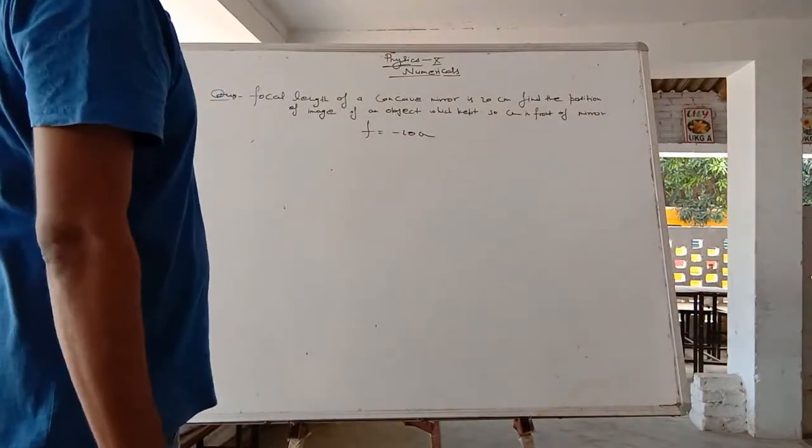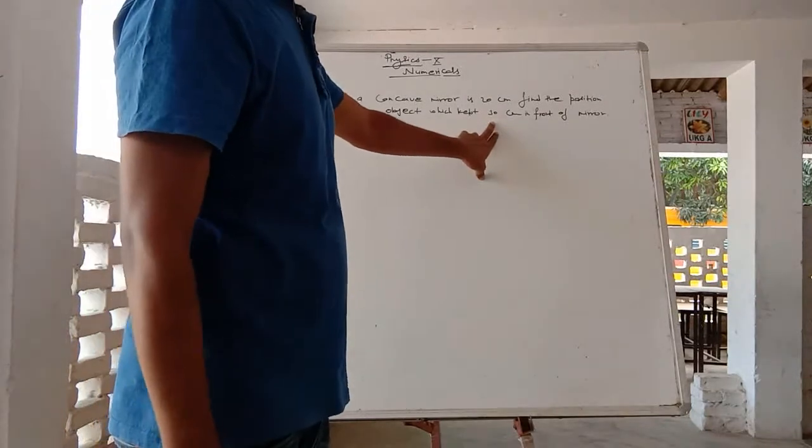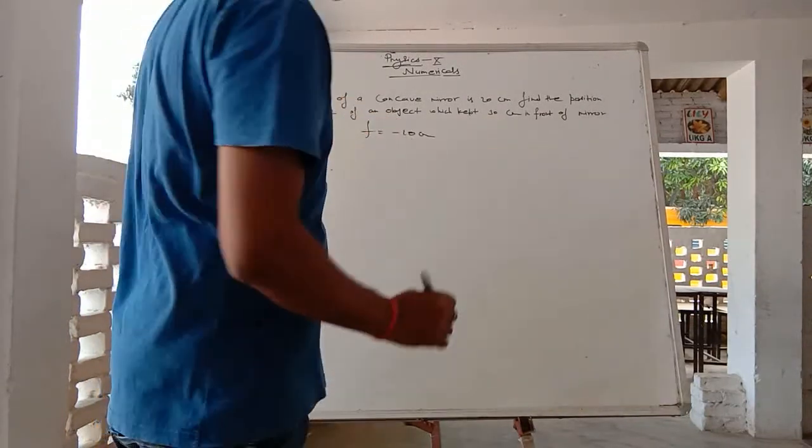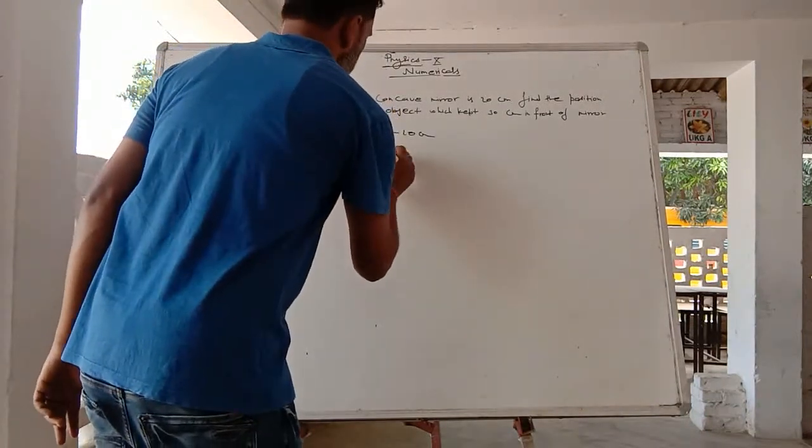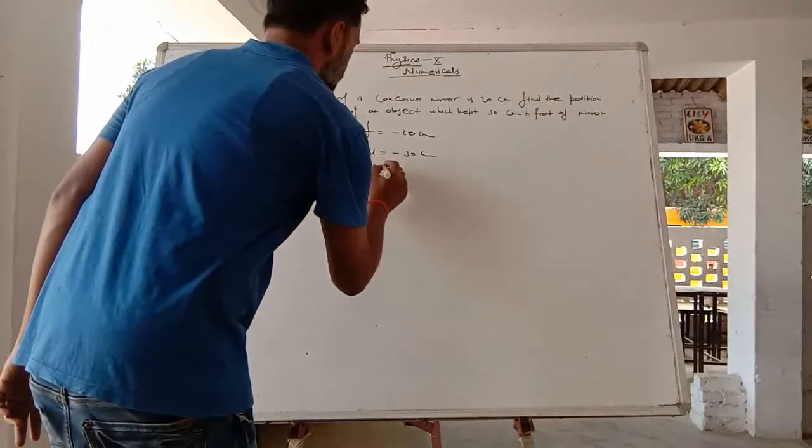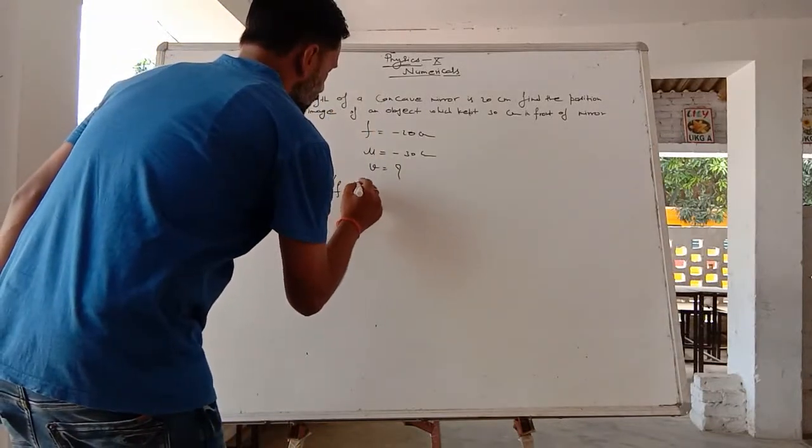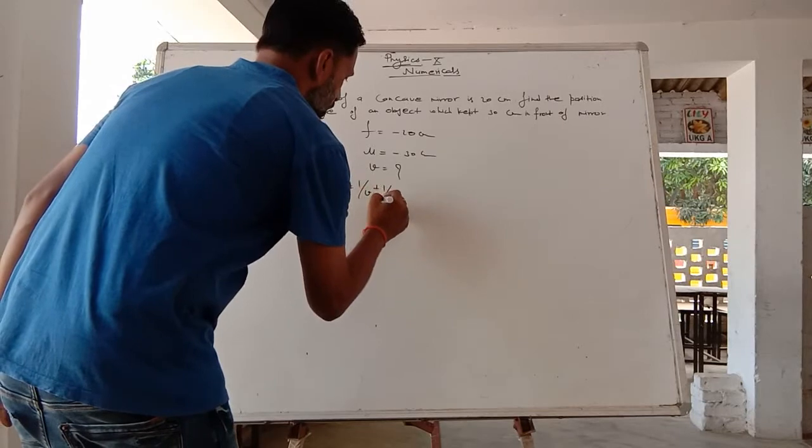Then we need to find the position of the image. The value of u is negative, minus 30 cm. The formula is 1 upon f is equal to 1 upon v plus 1 upon u.